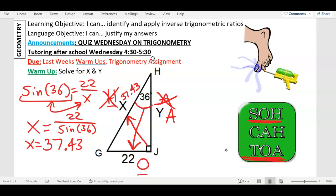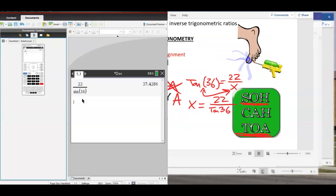TOA. So let's go ahead and write tan, the angle, 36, equals O over A, which is 22 over X. Just like last time, when X is on the bottom, you do the switcheroo. Tan 36 and X are going to switch spots. So X equals 22 over tan 36.